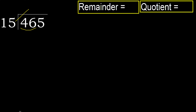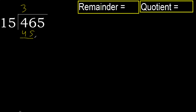But not greater. 15 multiplied by 4 is 60 — 60 is greater. Multiply by 3: 45 is not greater. Subtract: 46 minus 45 is 1.